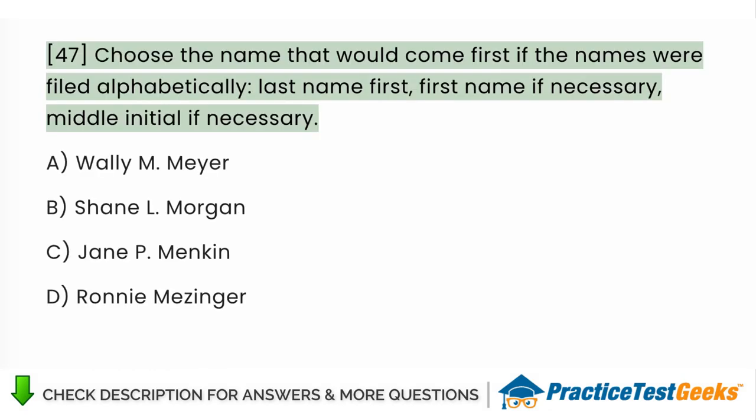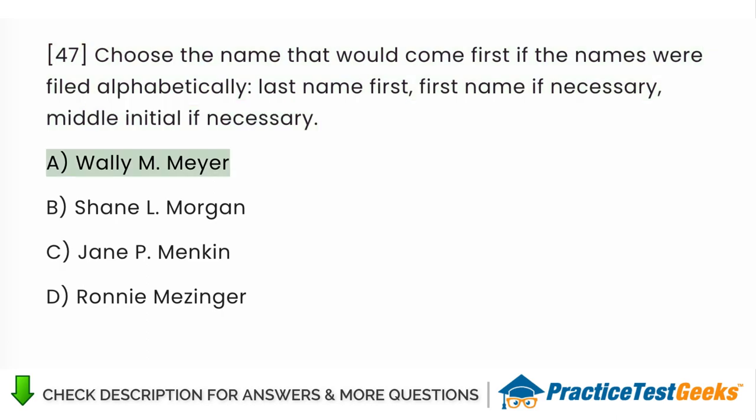Choose the name that would come first if the names were filed alphabetically, last name first, first name if necessary, middle initial if necessary. A. Wally M. Meyer B. Shane L. Morgan C. Jane P. Menken D. Ronnie Meisinger